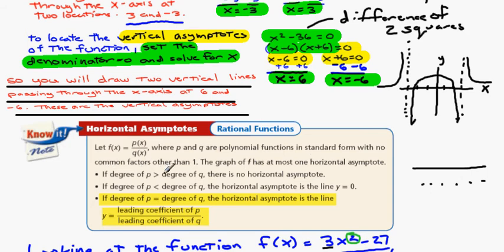If the degree of p is greater than the degree of q, so like if this is an x cubed and this is an x squared, then there is no horizontal asymptote. If the degree of p is less than the degree of q, then the horizontal line is the line y equals zero. So in other words, it's going to be the x-axis.